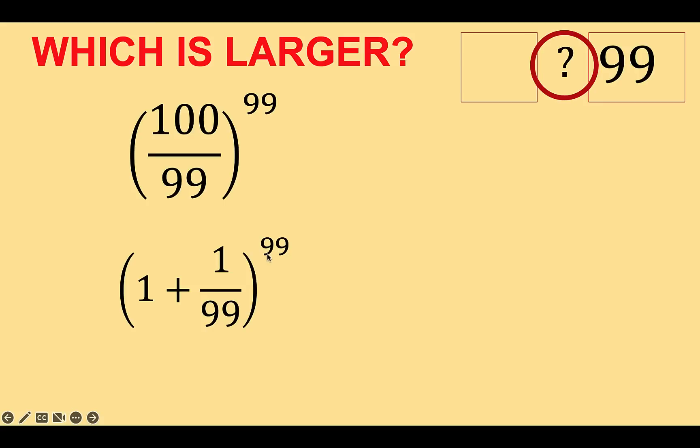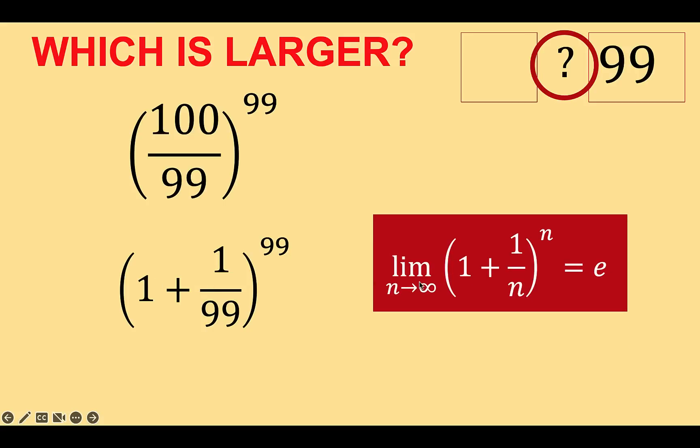This form is familiar because the limit of the quantity 1 plus 1 over n raised to n is equal to the Euler number e, which has an approximate value of 2.71.